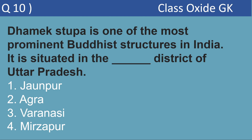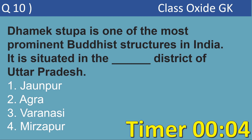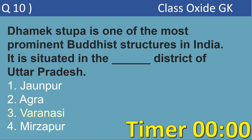Next MCQ related to Buddhism. Dhamak Stupa is one of the most prominent Buddhist structures in India. It is situated in the DASH district of Uttar Pradesh. Options are Jaunpur, Agra, Varanasi, Mirzapur. Note that not only the state but even the district can be asked — this question was asked in the SSC exam. The correct answer is Varanasi.